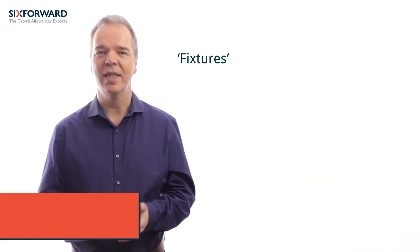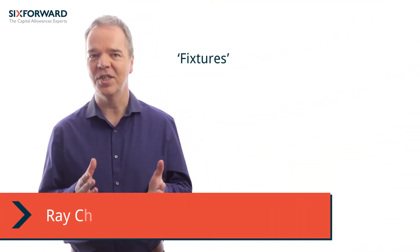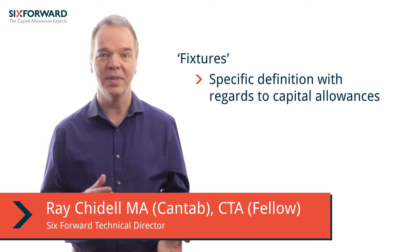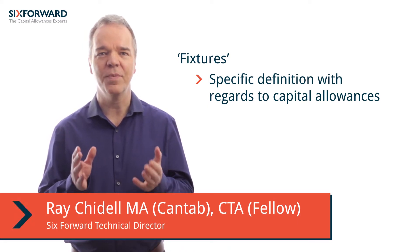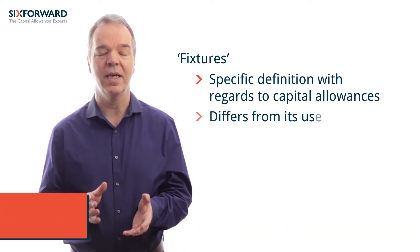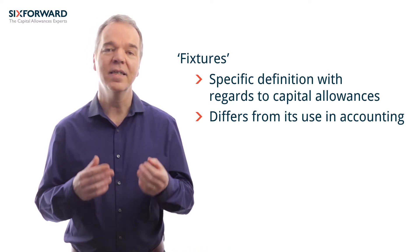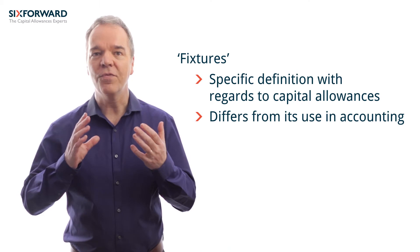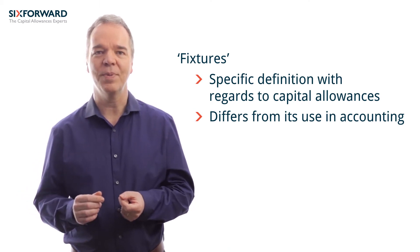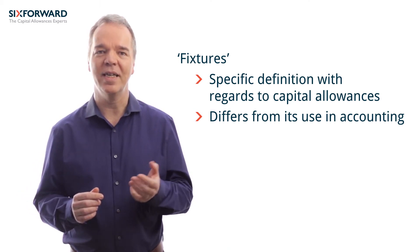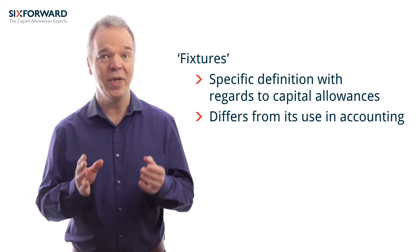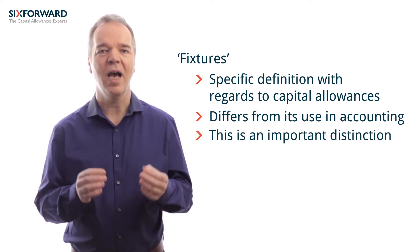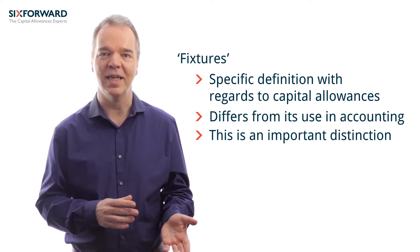As we saw last week, the term 'fixture' has a very particular meaning for capital allowances purposes, and that differs from the looser concept of fixtures and fittings that is used for accounting purposes. The first rule when approaching a capital allowances analysis is to ensure that we don't miss out on fixtures that are shown in the accounts under the heading of land and buildings.